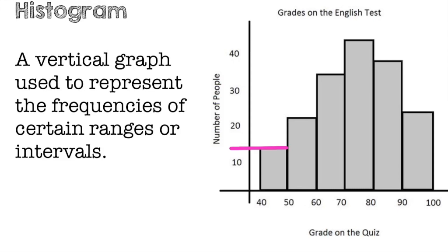13 people got between a 40 and a 50%. Between 50 and 60%, that would be approximately 21 or 22 people. Between 60% and 70%, that would be approximately 34 people.